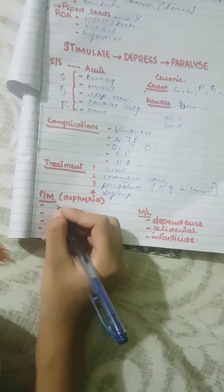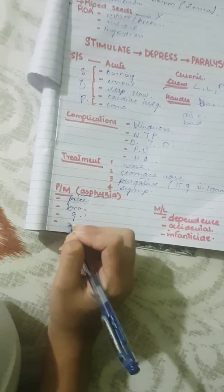Post-mortem changes: death is due to asphyxia. There would be pieces in the stomach with brownish discoloration, gastric irritation, and pulmonary edema.